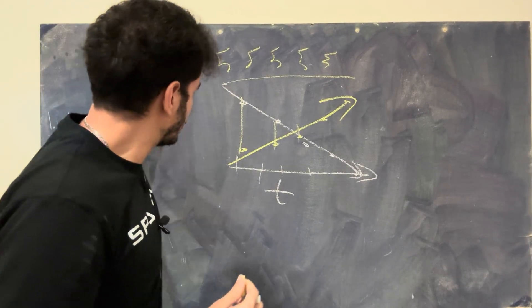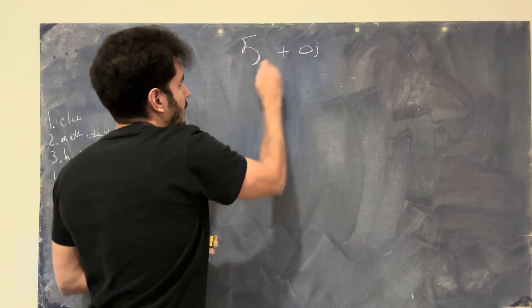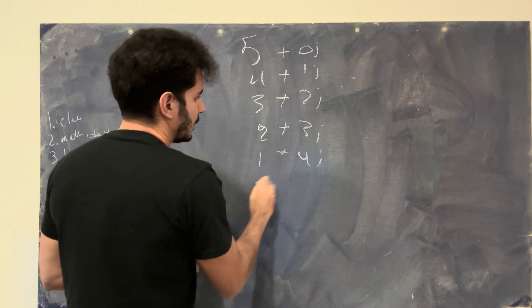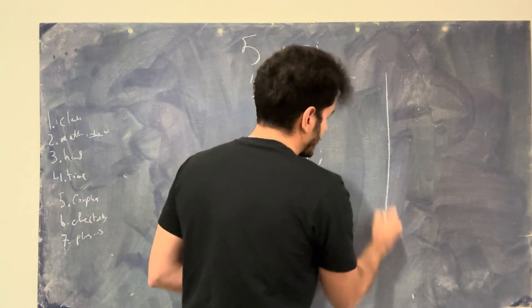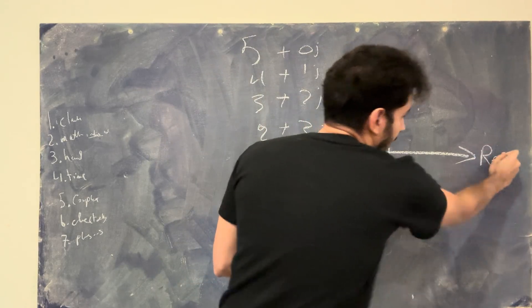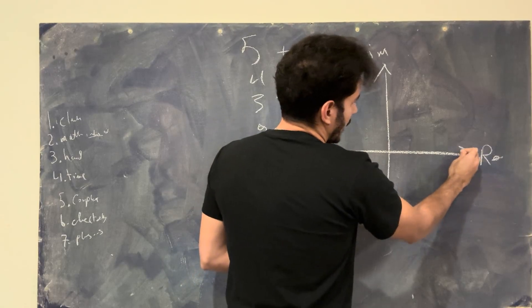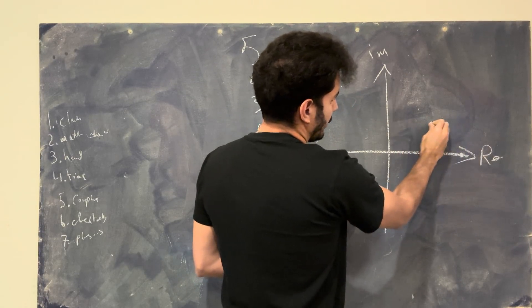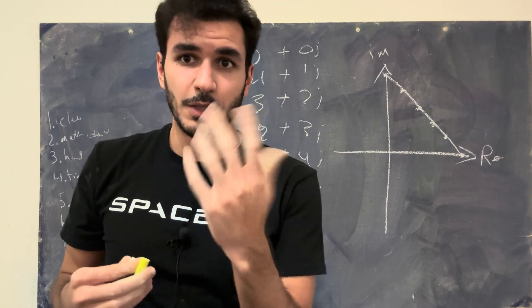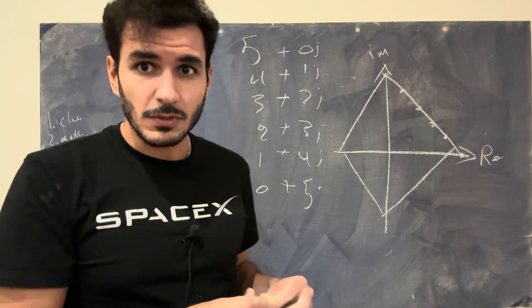Let's draw this on the complex domain. Taking our same examples — 5+0j, 4+1j, 3+2j, 2+3j, 1+4j, 0+5j — we can draw them on the complex plane where j or i is the imaginary or hidden number plane, and the horizontal axis is the real or visible axis. We can plot them like ordered pairs: at 5 real we have 0 imaginary, at 4 real we have 1 imaginary, and so on, giving us a shape. If I take this function and keep rotating, I end up with this nice little rhombus shape. This is what my function looks like on the complex plane.